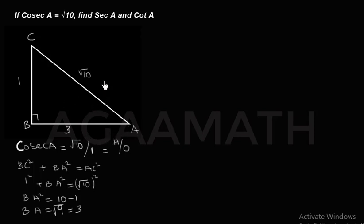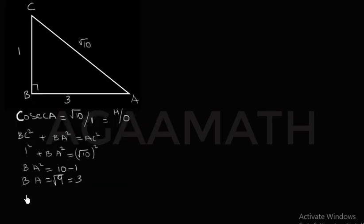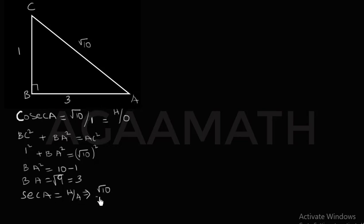Now we find secant A. Secant A is the reciprocal of cosine A. Cosine A equals adjacent over hypotenuse, so secant A equals hypotenuse over adjacent. The hypotenuse is root 10 and the adjacent to angle A is 3, so secant A equals root 10 over 3.